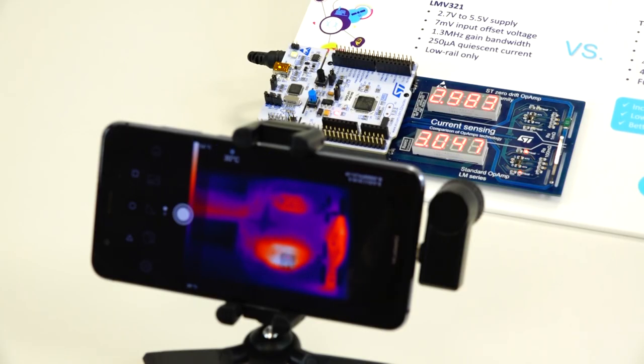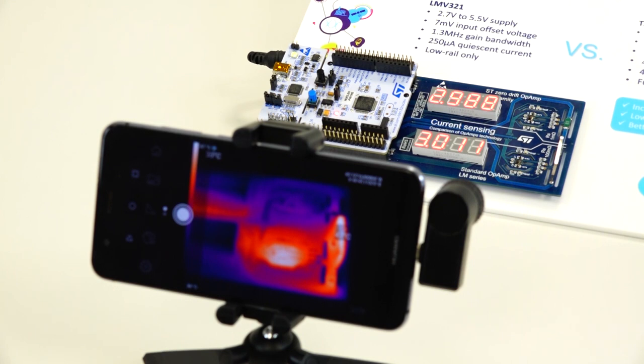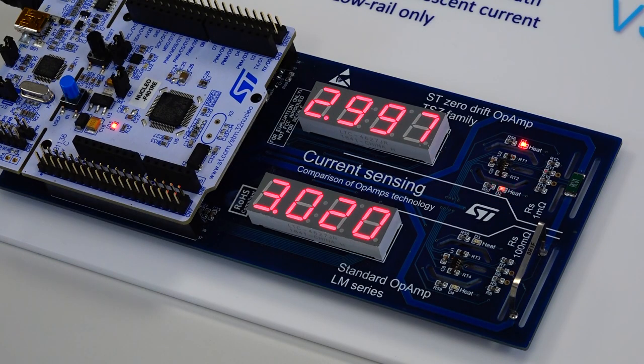Now we start to heat up the LMV device. When the temperature is rising, the input offset voltage drifts and as you can see, the reading drifts as well. The behavior is different in the case of the TSZ family amplifier. The temperature rises but the readings remain the same.